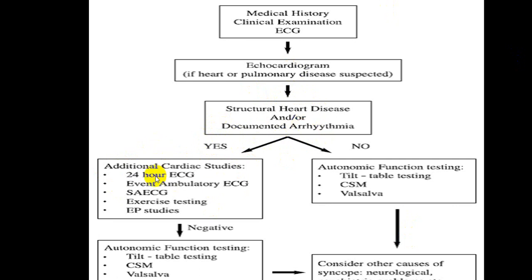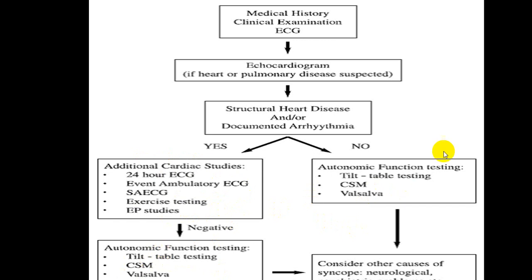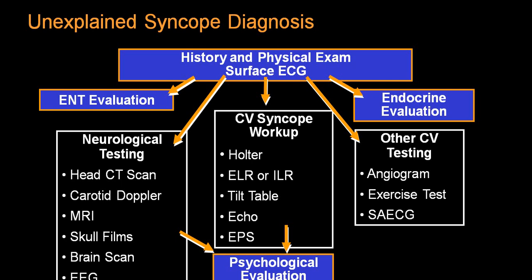Get good history, do echocardiography to rule out structural heart disease; ECG will identify cardiac arrhythmias. If cardiac arrhythmias clearly identified, decide regarding treatment. If no structural heart disease and no demonstrated cardiac arrhythmias, go for tilt table test, carotid sinus massage, or Valsalva maneuver to identify neurally mediated groups. If structural heart disease and ECG identifies it, go for further studies; if not identifiable, go for 24-hour ambulatory monitoring, EP studies, internal loop recorder, or exercise testing. If all reports are negative, rule out neurally mediated groups — tilt table test, carotid sinus massage, Valsalva maneuver, or loop recorders.